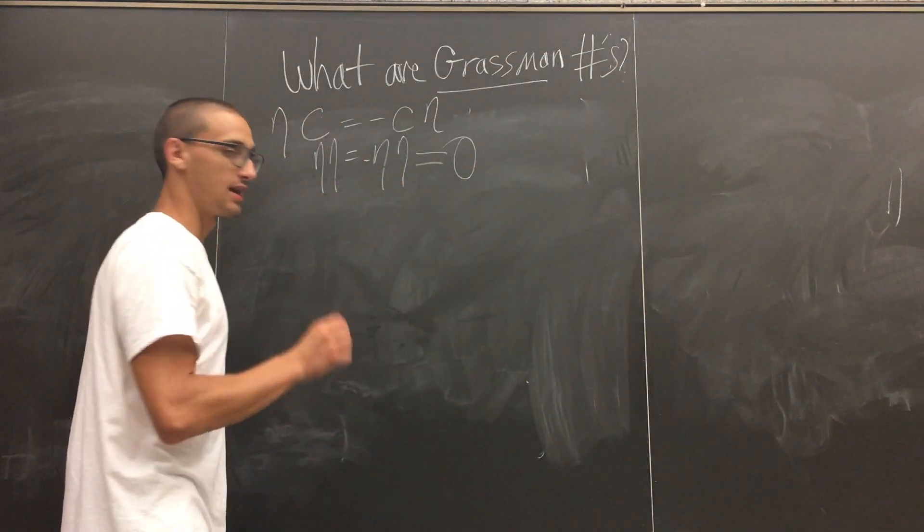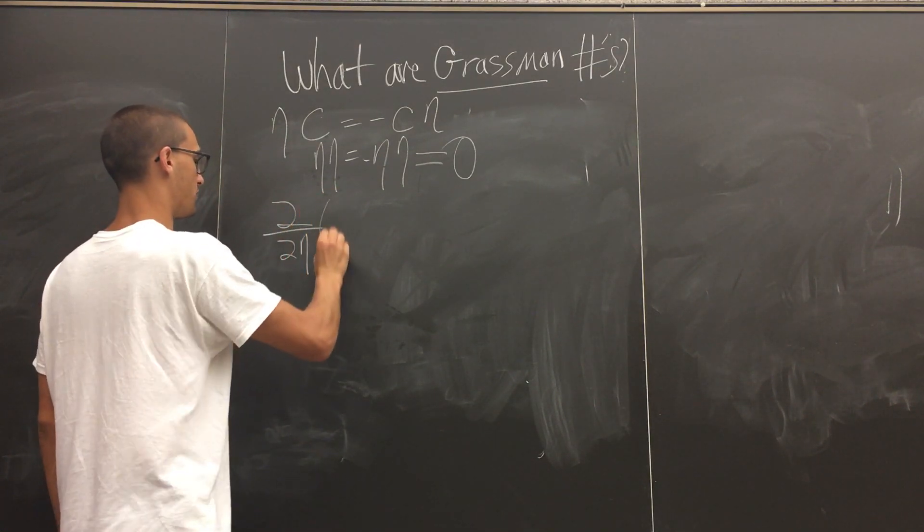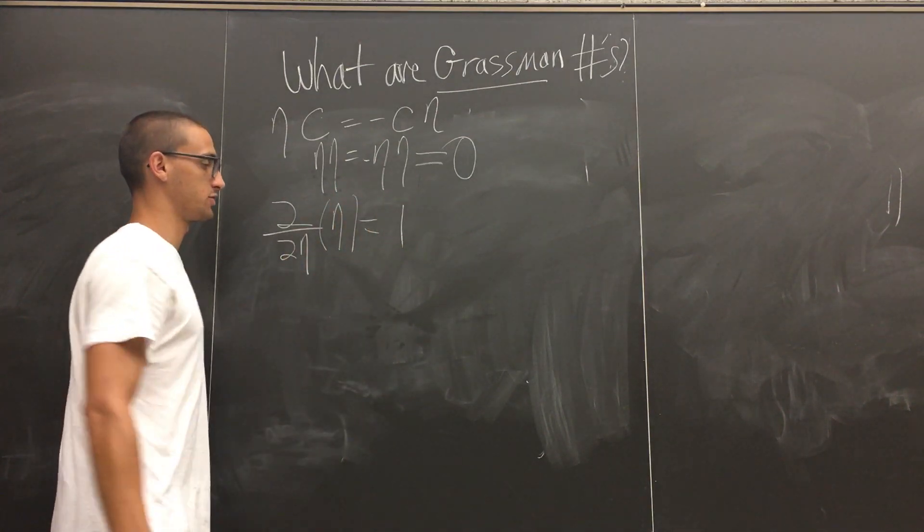This relationship gives us zero. Now we could use this to define differentiation. So you have η and you define it as such. This equals one, as normally.